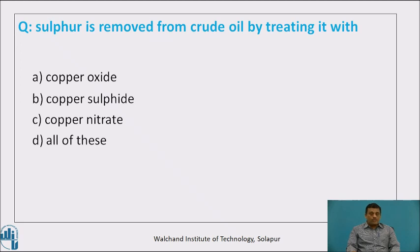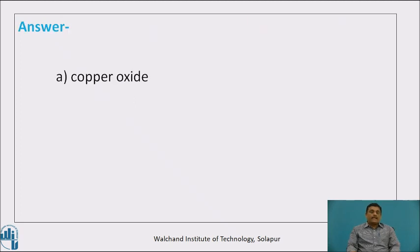Here is a question: sulphur is removed from crude oil by treating it with — option A: copper oxide, option B: copper sulphide, option C: copper nitrate, option D: all of these. The correct answer is option A, copper oxide. When copper oxide is treated with crude oil containing sulphur, the sulphur gets converted into copper sulphide precipitate, which can then be separated by filtration.